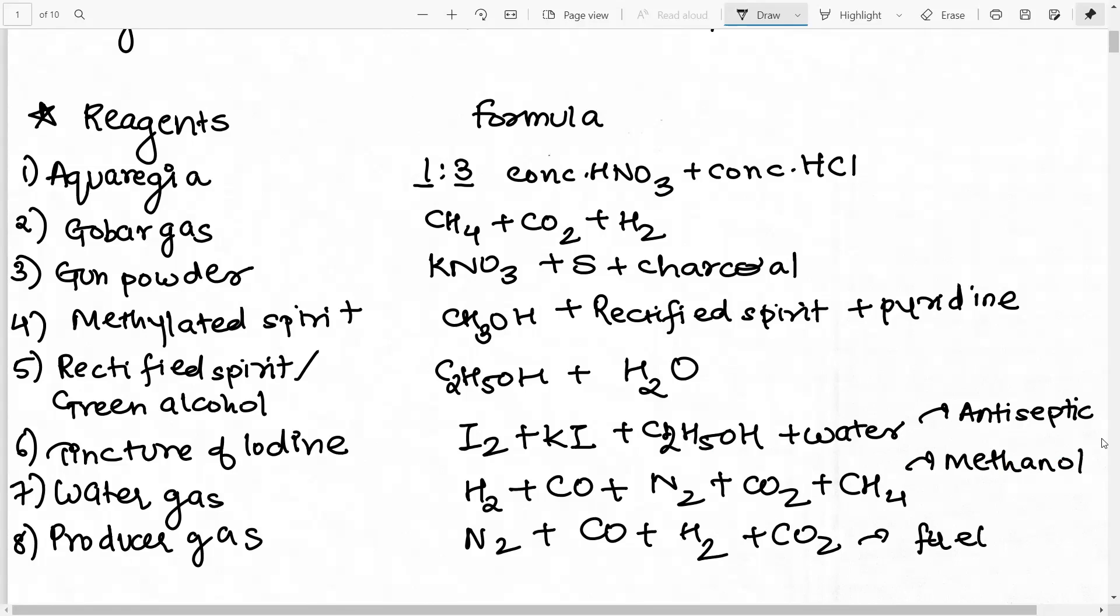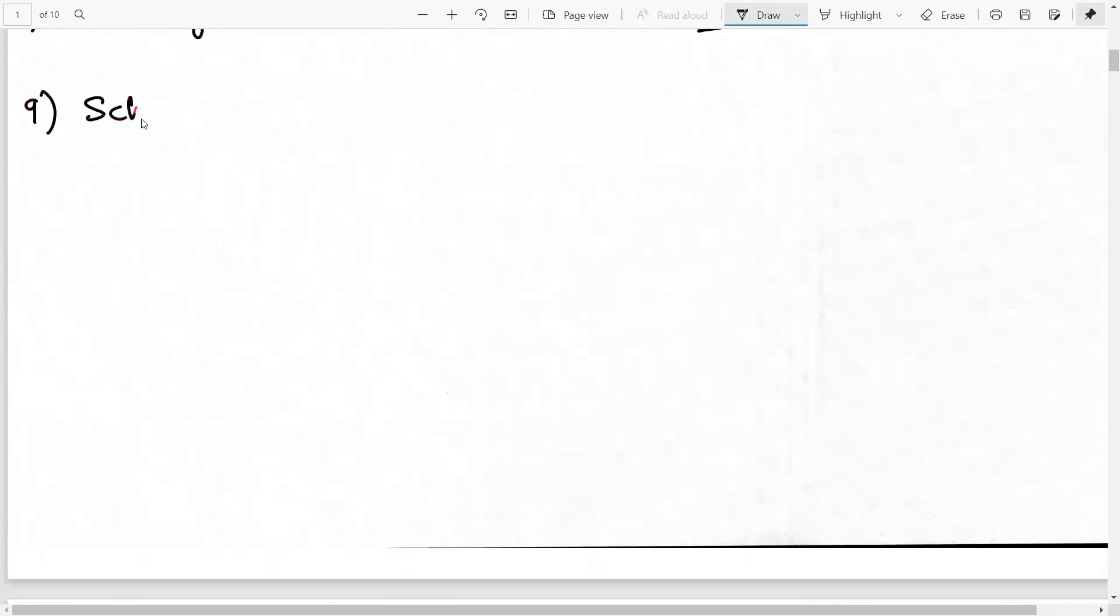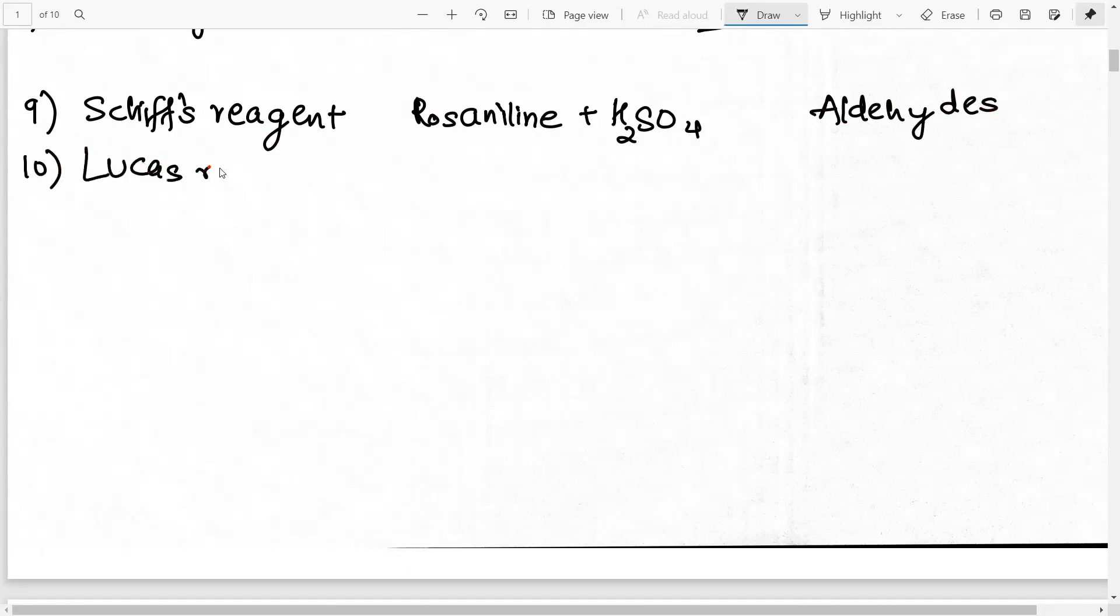Then next you have a few reagents. First reagent is Schiff's reagent. Y'all must have all studied about this before. Basically it is a solution of para-rosaniline along with sulfuric acid H2SO4. And it is basically used in the detection of aldehydes. Then you have the Lucas reagent. Basically it is a composition of concentrated HCl along with anhydrous ZnCl2. It is used to distinguish between primary, secondary and tertiary alcohols.